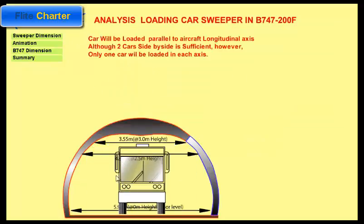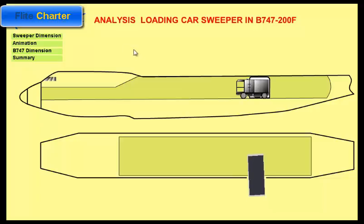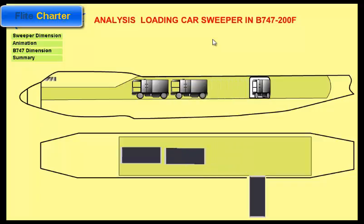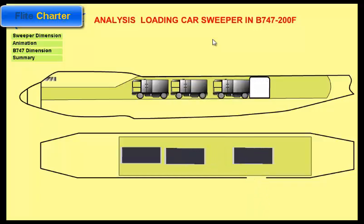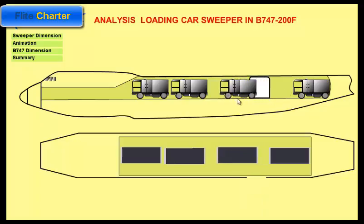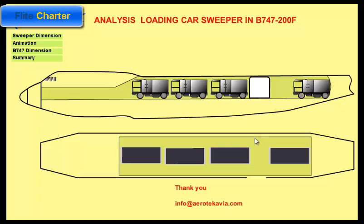We can fit two cars, however for this purpose we will fit one longitudinal car in each axis because we don't have an issue with the length. As a summary, we will enter the first and second car longitudinally into the forward cargo area, followed by the third car which will be moved afterwards, and the last car which will move into a fixed position. We have another space for approximately one car in the forward cargo area for additional space. Thank you.